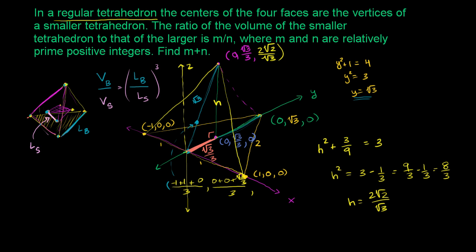Then average the z points: 0 plus 0 plus 2 square roots of 2 over the square root of 3, all over 3. The first coordinate is clearly 0. The second coordinate is square root of 3 over 9 — that's square root of 3 over 3, divided by 3. And the z coordinate is 2 times the square root of 2 over 3 times the square root of 3. These are the coordinates for the center of this face.